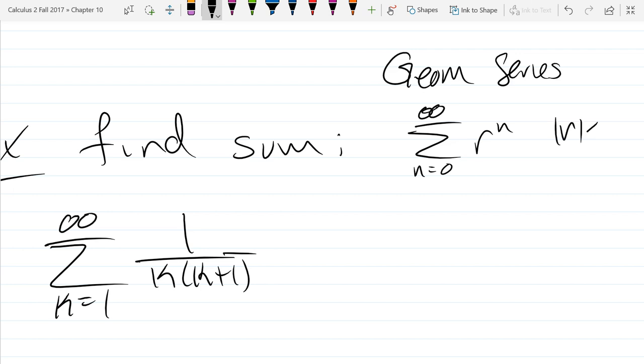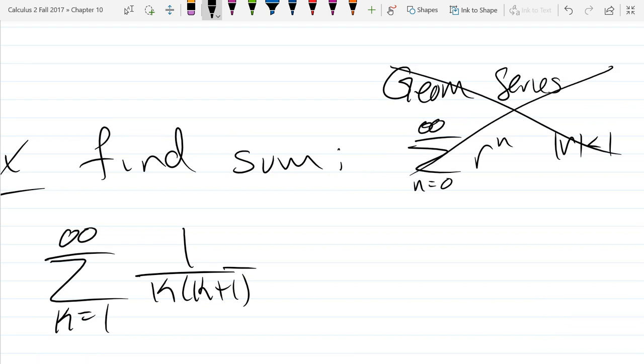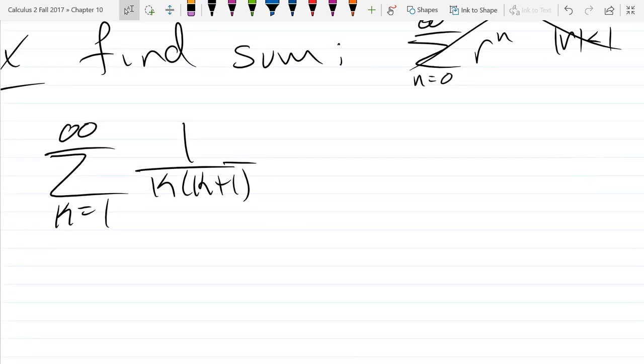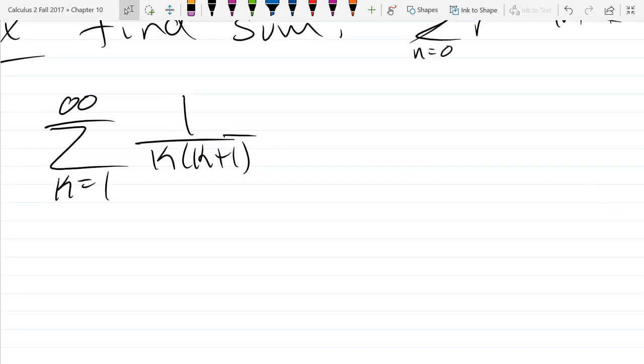Of course, you need your r to be absolutely less than 1. So this is not a geometric series, so that's out. So we can't just use that formula. So let's write out some terms and see if we see a pattern. That's about the only thing you can really do on the non-geometric sums.